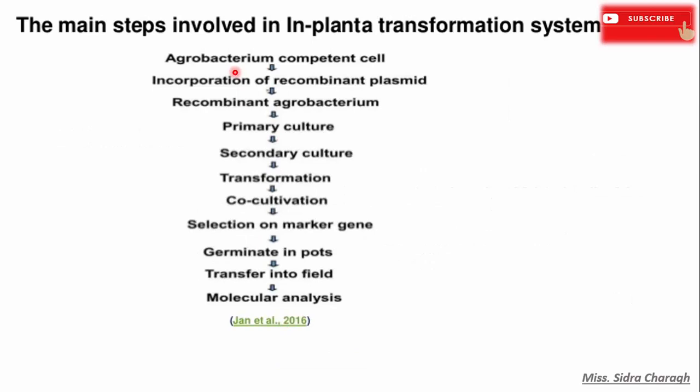Here are the basic steps involved in in-planta transformation technique: first, preparation of Agrobacterium competent cells; then incorporation of the recombinant plasmid; then recombinant Agrobacterium transformation; then we perform primary culture, then scanty culture, then transformation of the plant, and then co-cultivation.